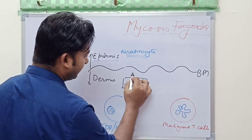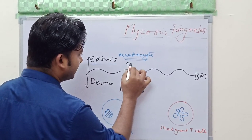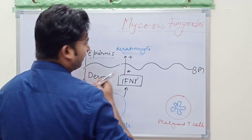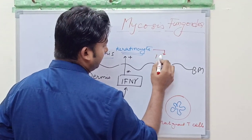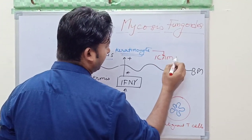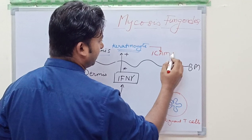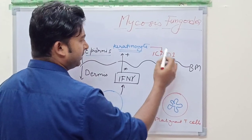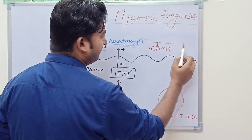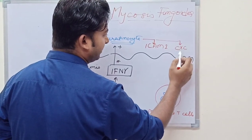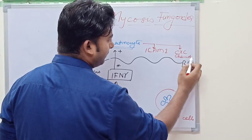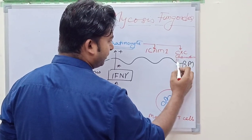This interferon gamma stimulates the keratinocyte and leads to increased secretion of intercellular adhesion molecule 1 (ICAM-1), and also a chemokine which is CXC chemokine inducible protein 10.